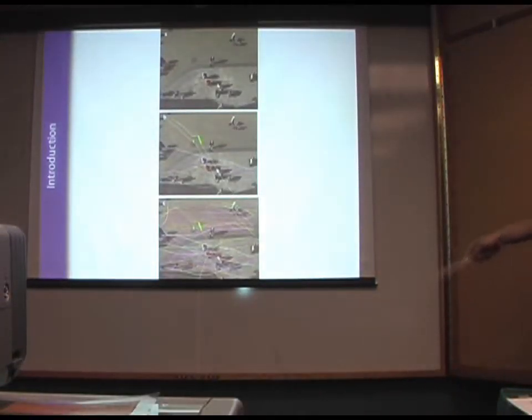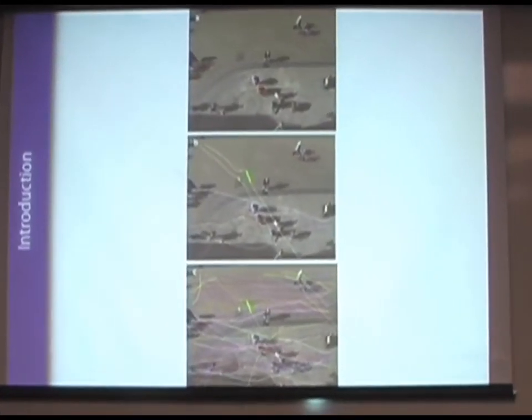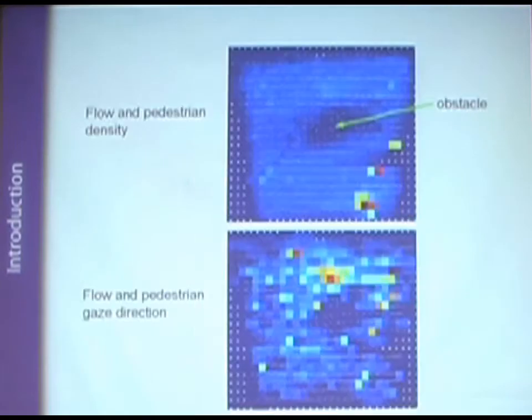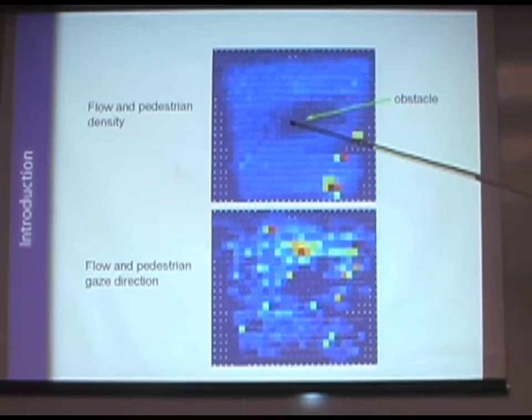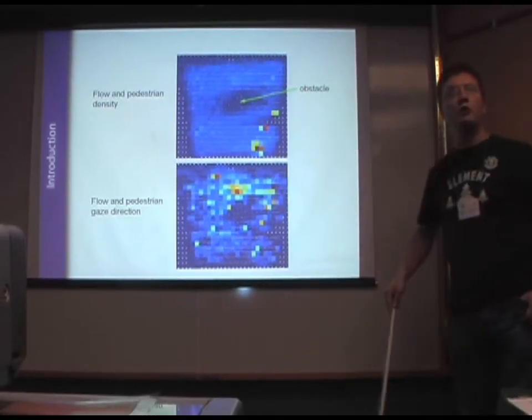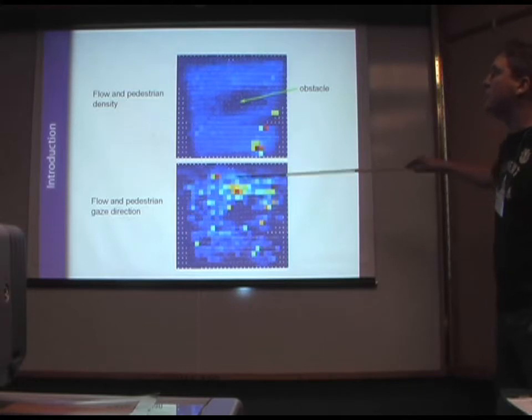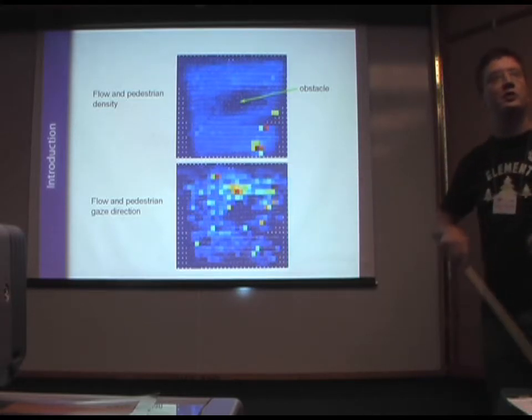We've also been using very similar technology to analyze the motion of human crowds. This is Corn Market Street in Oxford that we've been filming from above. And we've been interested in how people interact with obstacles. So this is the density of pedestrians. These flow vectors are measured from real crowds. And we're also interested in where the individuals are looking.